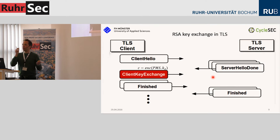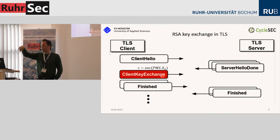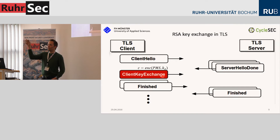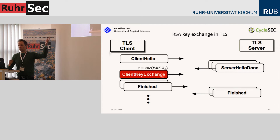If someone records this key exchange and all the data sent afterwards, and can break the encrypted session key — the client key exchange — they can simply decrypt all the data that was transferred. This happened, for example, to Lavabit. If someone steals your private key from a TLS server, years later they can still decrypt all the traffic they recorded. Everything rises and falls with this client key exchange: if you can break it, you can break TLS even afterwards.